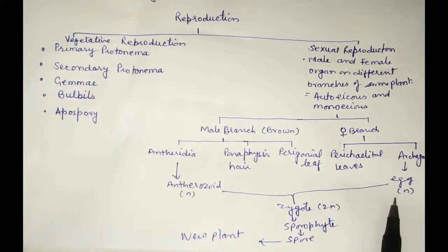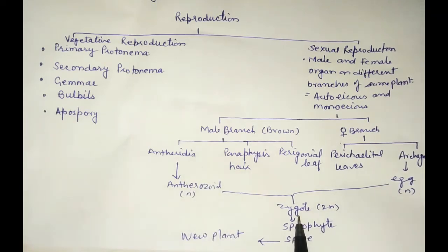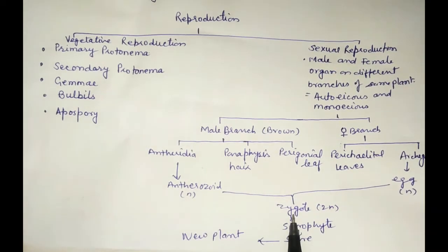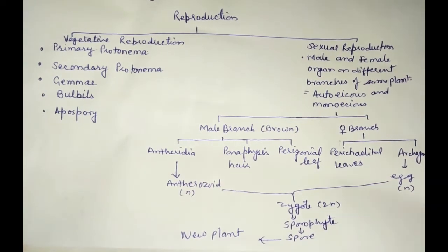Antherozoids are formed from antheridia, and they fuse with the egg to form a zygote. We studied the zygote in the previous lecture. Now we are going to study the development of the sporophyte, spores, and development of a new plant.